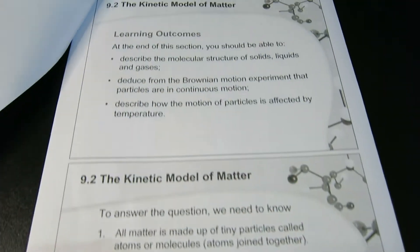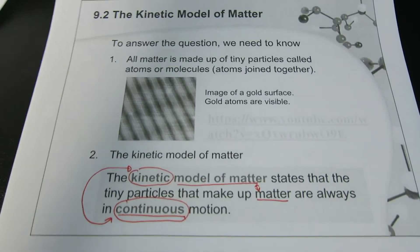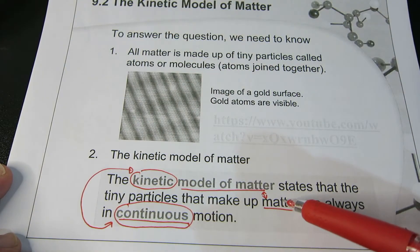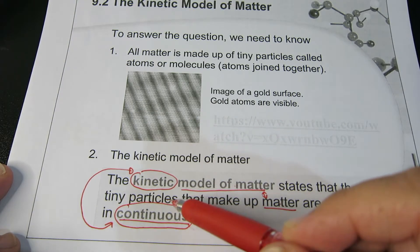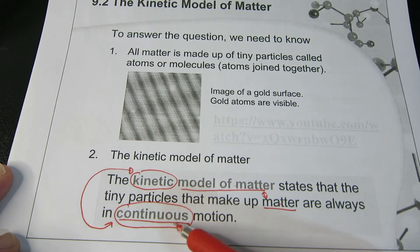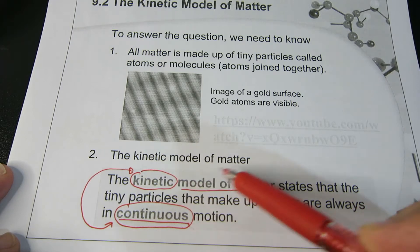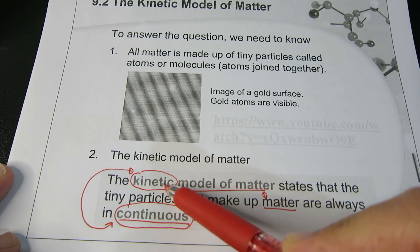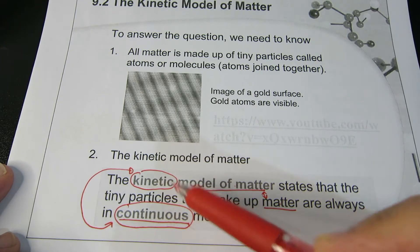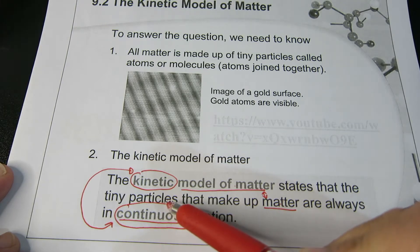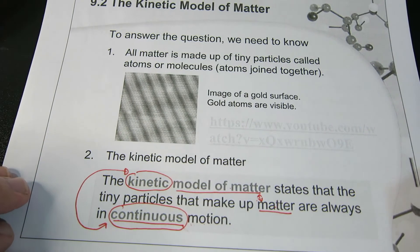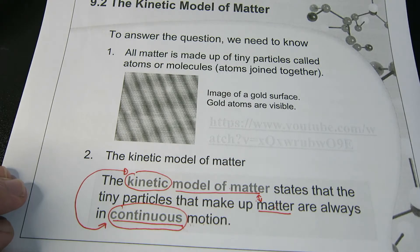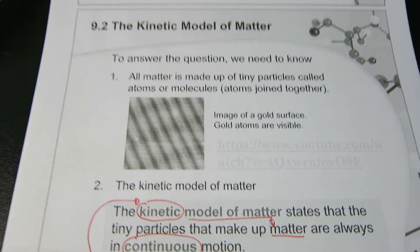Moving on to what exactly is the Kinetic Model of Matter. The kinetic model of matter states that all matter is made up of tiny little particles, and these particles are always continuously moving. That's why it's called the kinetic model of matter — the word 'kinetic' comes from kinetic energy, which has to do with motion. With advances in technology, we can now actually map atoms at the atomic scale, so let me show you a quick video of what it looks like.